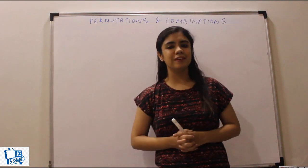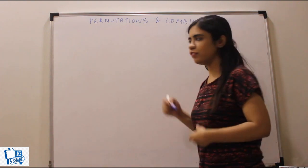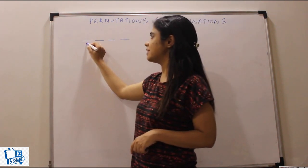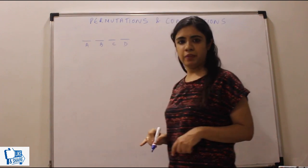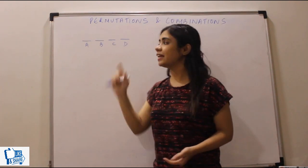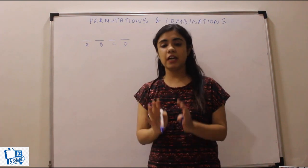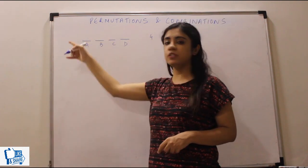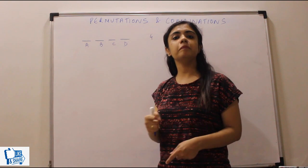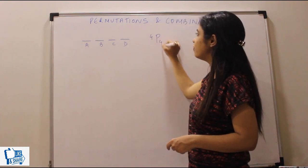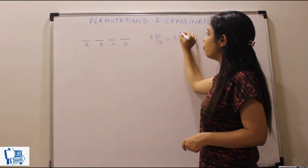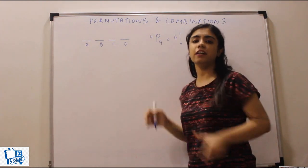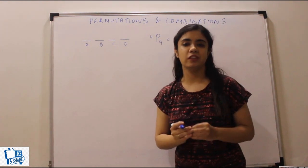Let's start with the concept of circular arrangements. Let's say I have four people A, B, C and D in a linear arrangement. I'm asking you in how many ways can I arrange these four people? So I have four people and four positions, so they can be arranged in 4P4 ways, which is nothing but 4 factorial ways. That is the answer for a linear arrangement. But what if it's a circular arrangement?